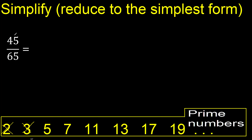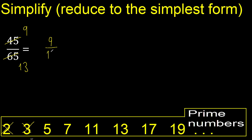They can be divided by 5 because the last digit is 0 or 5. Therefore, 45 divided by 5 is 9, and 65 divided by 5 is 13. Finished — because 9 and 13 cannot be divided by the same number.